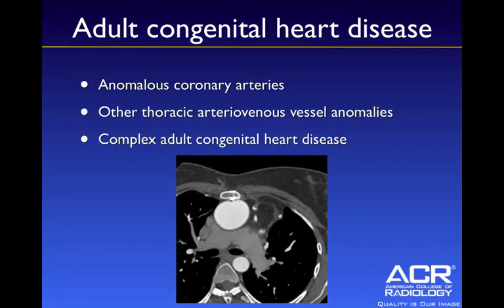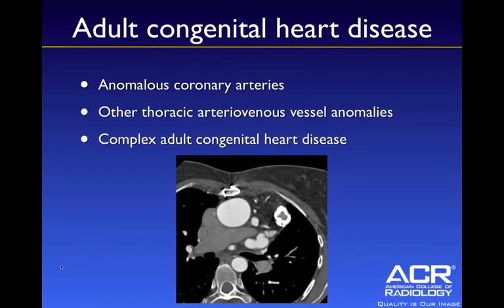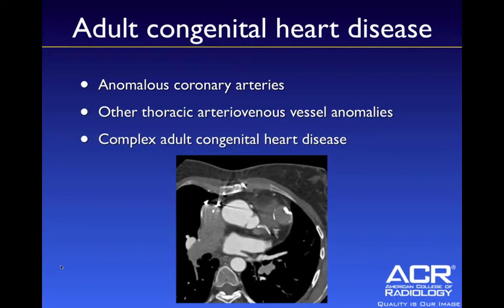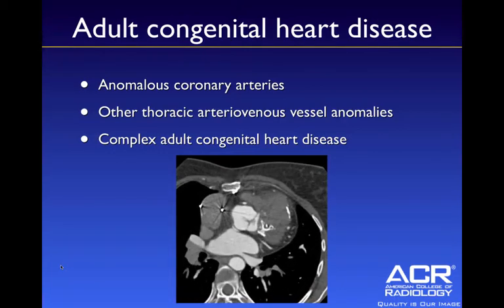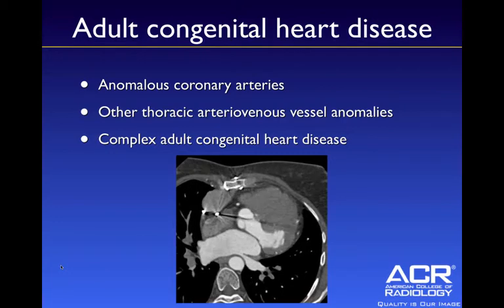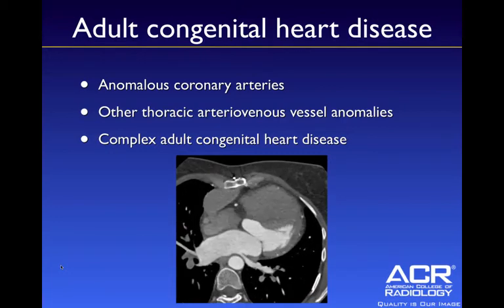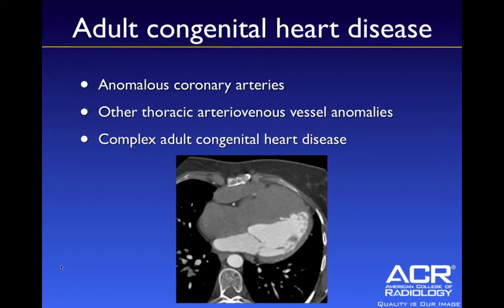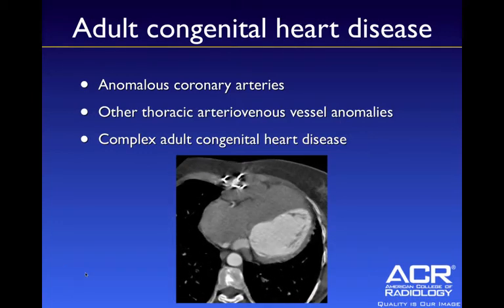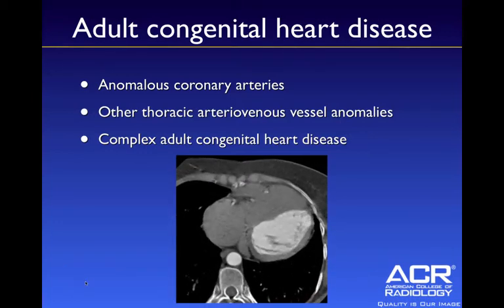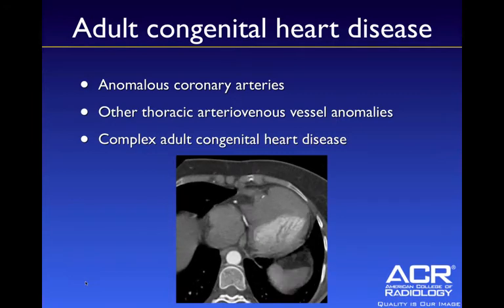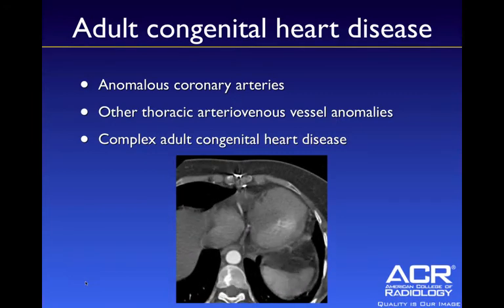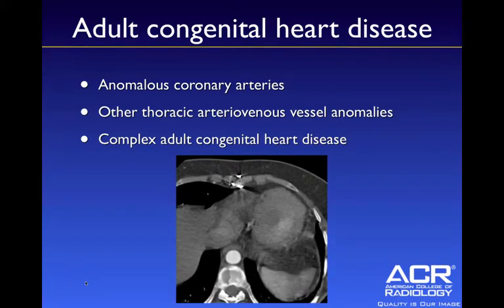Adult congenital heart disease — many patients will get MRIs, which is very appropriate, but there are certain situations where cardiac CT is preferred. For example, patients with contraindications to MRI can have cardiac CT answer the clinical question. Also, if you're particularly concerned about coronary artery anatomy, cardiac CT is quite appropriate.